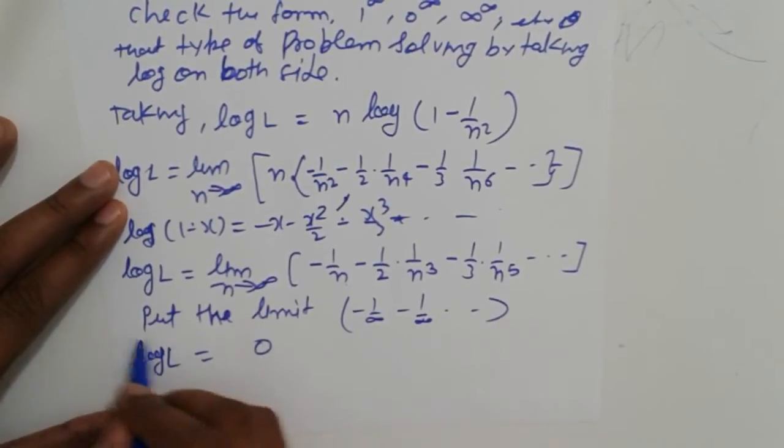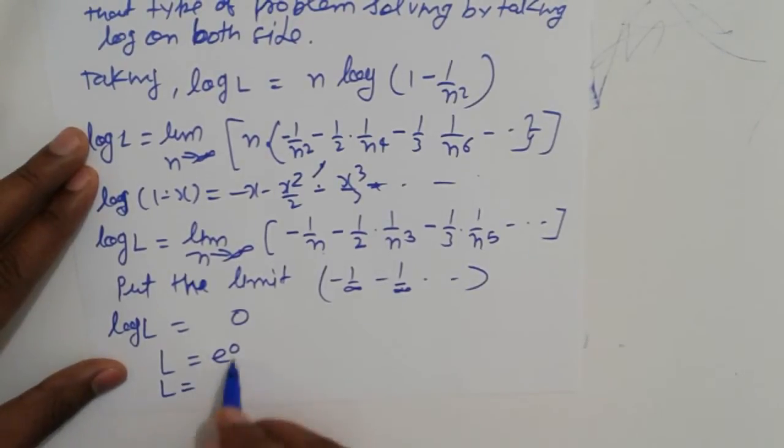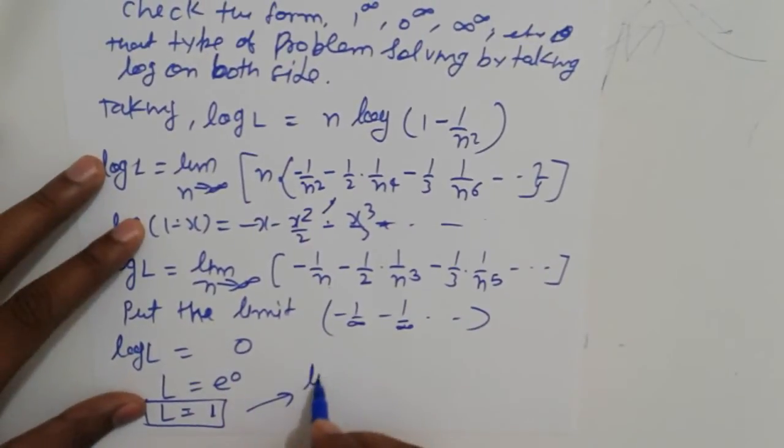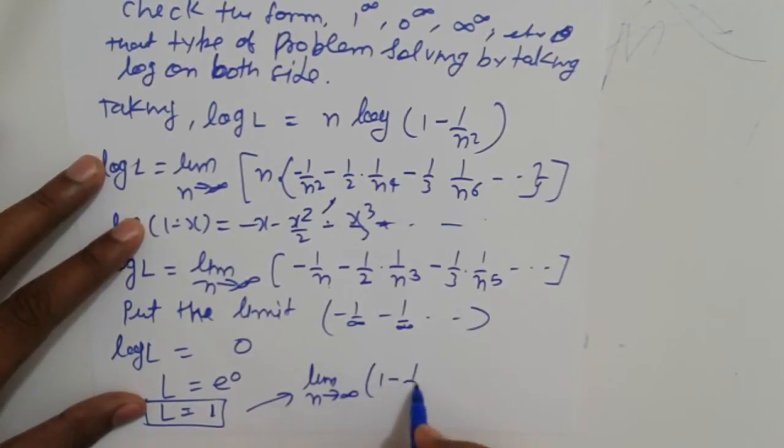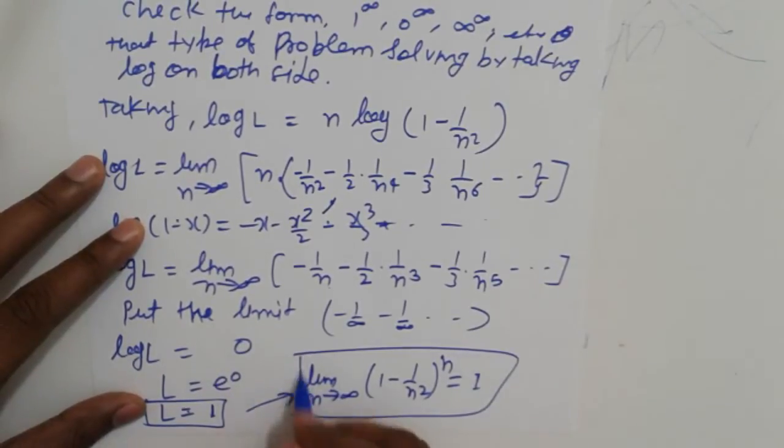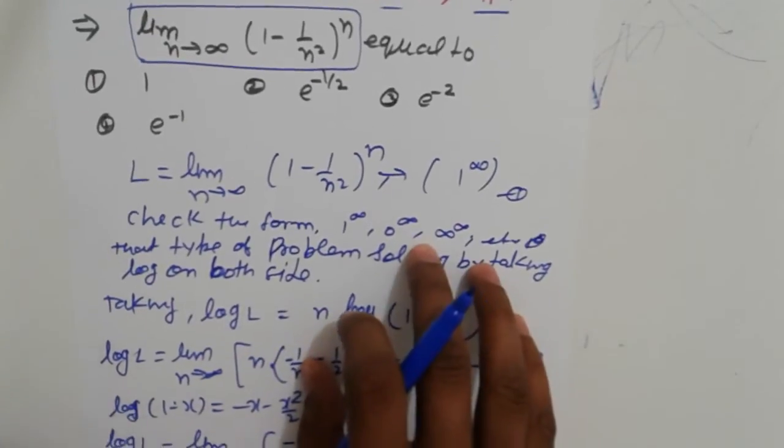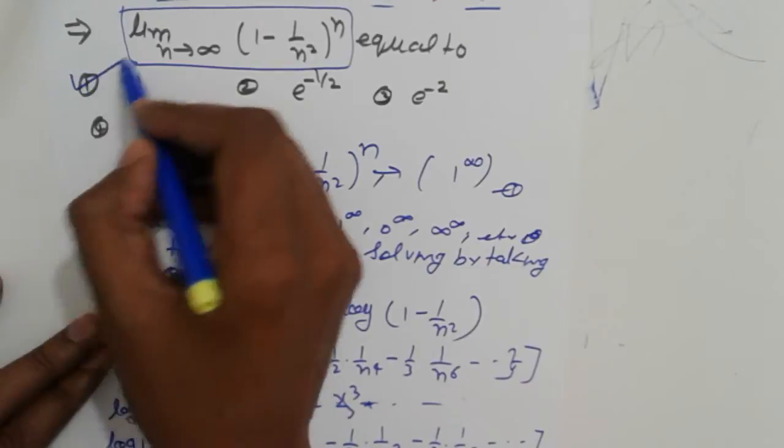So log L is 0, therefore L equals e⁰, which simplifies to L = 1. This L is what we considered: limit n tending to infinity (1 - 1/n²)ⁿ equals 1. Friends, our target is to find not only the solution, but the methods.